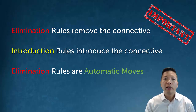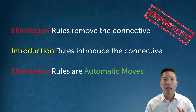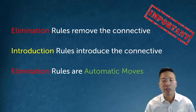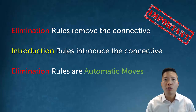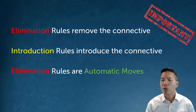In general, rules come in two types: elimination rules and introduction rules. Elimination rules allow us to remove the main connective of the sentence in question. For example, if we have a conditional statement, an elimination rule will allow me to get at the parts of the conditional, like an antecedent and a consequent. Introduction rules allow us to build bigger sentences out of smaller parts, so I could use an introduction rule to build an and statement or an or statement.